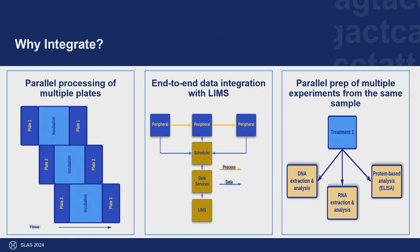Why would we integrate rather than just buy all these instruments separately and set them up in a lab? The first reason integration was important to us is it allows parallel processing — one plate comes off the PCR1 assembly and goes to thermal cycling while we keep moving. Instead of having one technician walk a plate from your liquid handler over to the thermocycler, you are always moving through the process. We were able to build a process through integration that would allow us to run up to five plates at a time with minimal human interaction.